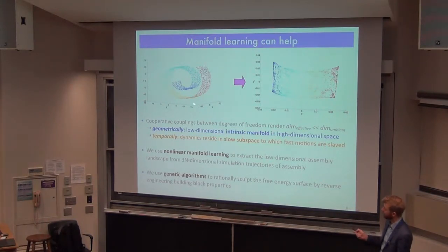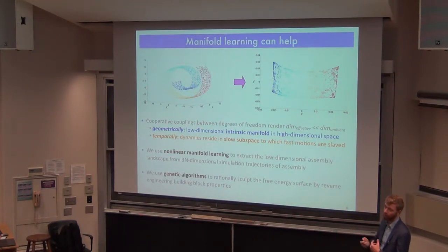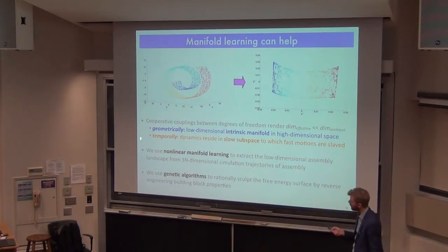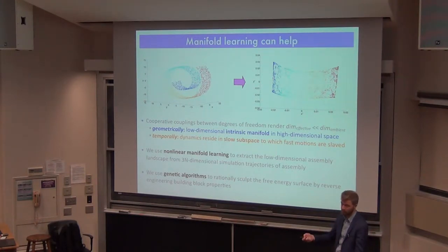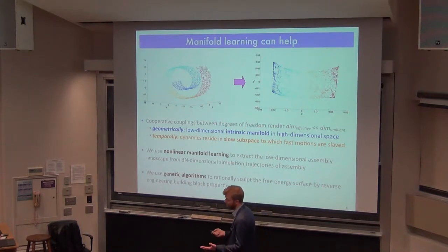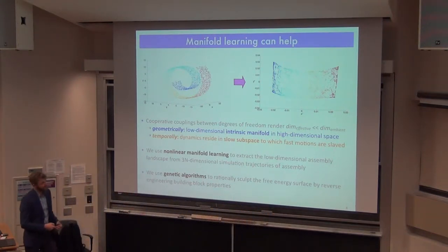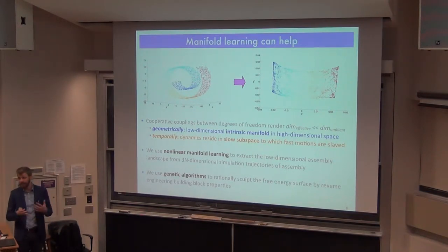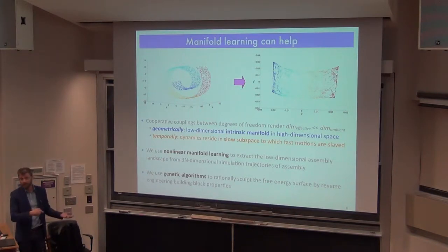This is illustrated by the Swiss roll dataset — a 2D manifold living in 3D space, analogous to a low-dimensional manifold in 3N-dimensional space. We use nonlinear manifold learning techniques — nonlinear generalizations of principal components analysis or multidimensional scaling — that can handle curvy manifolds. PCA would fail badly on this manifold, but a nonlinear technique can map out the curvilinear structure. We'll use nonlinear manifold learning to give us good variables with which to build our free energy landscapes.